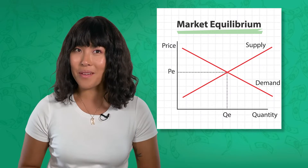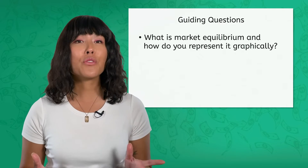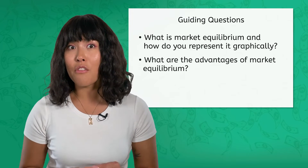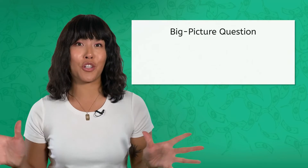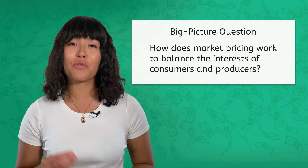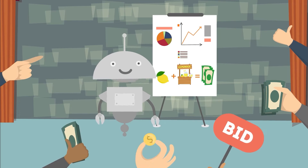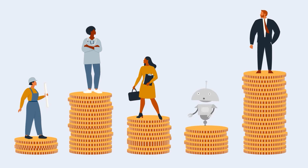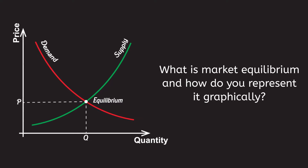It's all about finding the right prices at the right time to satisfy both the seller and the customer. By the end of today's lesson, you should be able to answer the following questions: What is market equilibrium and how do you represent it graphically? What are the advantages of market equilibrium? How does market equilibrium change? And you should start thinking about our big picture question: how does market pricing work to balance the interests of consumers and producers? Go ahead and get your PDF ready — you're going to want to follow along with some of the graphs we'll be looking at in this lesson.